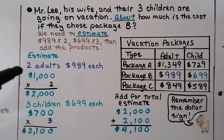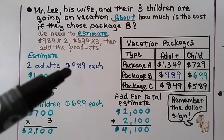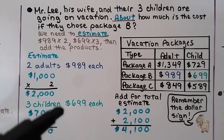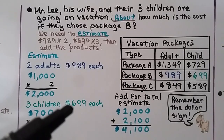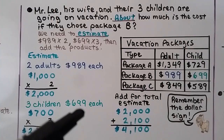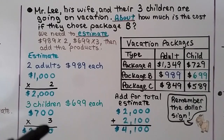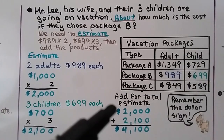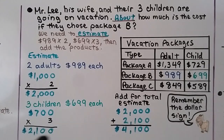We have two adults at $989 each. $989 rounds to $1,000, so we have $1,000 times 2 — that's $2,000. We have three children at $699 each. $699 rounds to $700, and we multiply by 3 to get $2,100. We add $2,000 plus $2,100 and get $4,100.